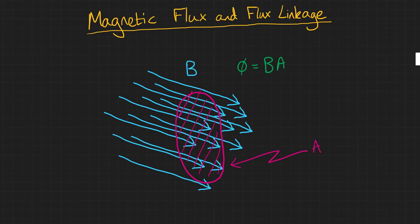So our equation becomes phi equals B multiplied by A, where B is the magnetic flux density measured in Teslas, A is the cross sectional area measured in metre squared.